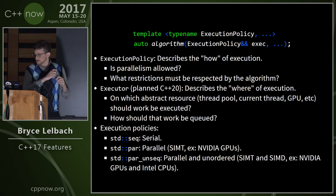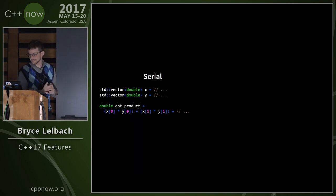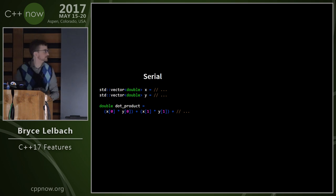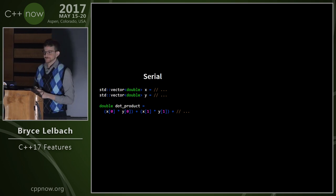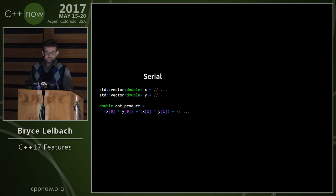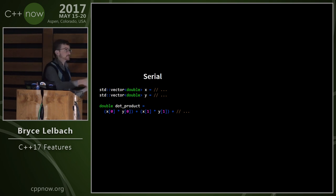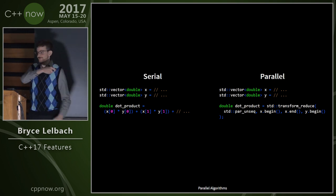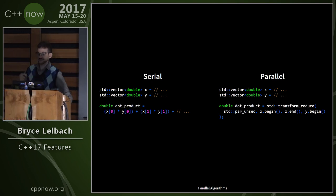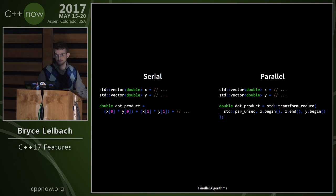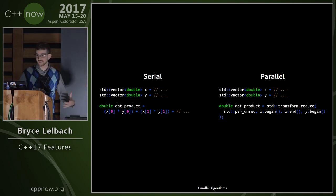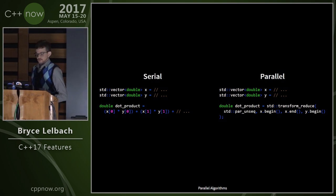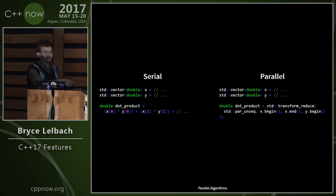transform_reduce is a favorite feature. To compute a dot product of two vectors in C++17 you can use transform_reduce with a parallel execution policy — awesome and amazing. It's a more generalized inner product. The binary-binary form of transform_reduce takes two sequences and two binary operators: a binary reduction and a binary transform.